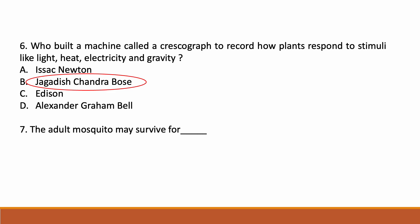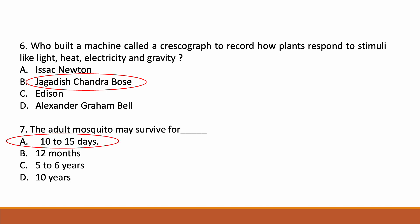The adult mosquito may survive for — Option A: 10 to 15 days, Option B: 12 months, Option C: 5 to 6 years, Option D: 10 years. Correct answer is Option A: 10 to 15 days.